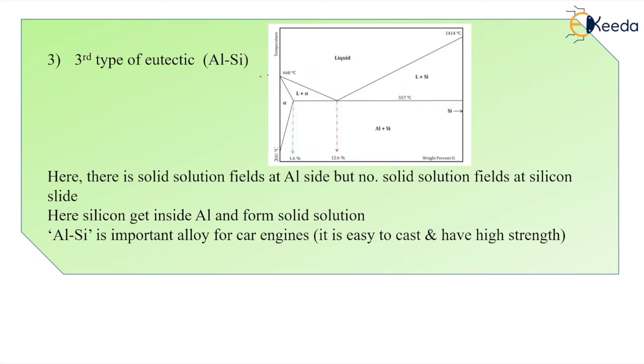So this is the melting point of the aluminum and this is the melting point of the silicon. You can see here there is a solid solution field at the aluminum.